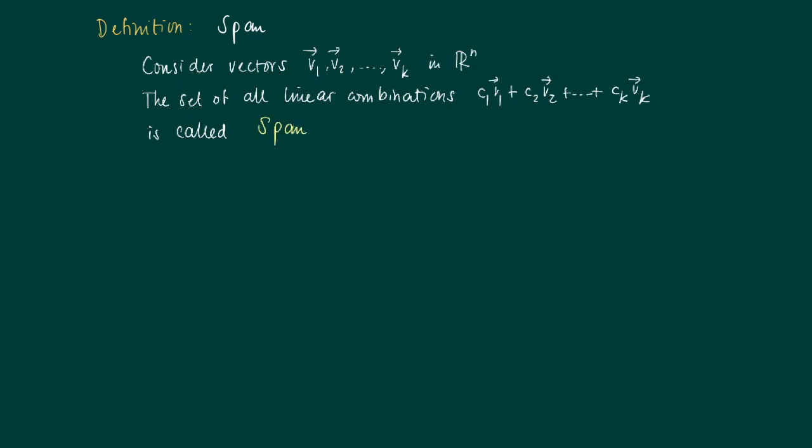This is called the span of v₁ to vₖ. For example, we've seen that any vector in R² can be written as a linear combination of e₁ and e₂, the vectors (1,0) and (0,1). So actually the span of these two vectors is the complete R², so any vector in R² can be written as a linear combination of e₁ and e₂.